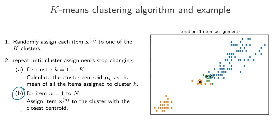On the next slide I'll show the result of running step 2b. As expected, the points at the bottom were assigned to the orange cluster, just a few points in the middle were assigned to the green cluster, and most of the points at the top were assigned to the blue cluster. We're in a loop, so now we go back to step 2a for the second iteration.